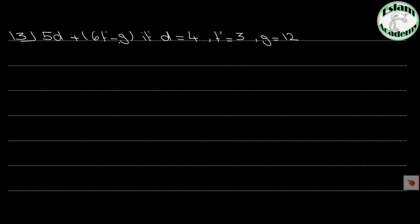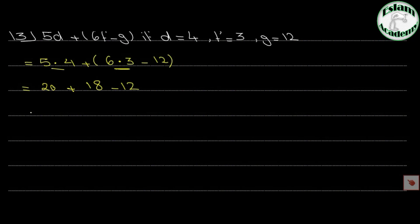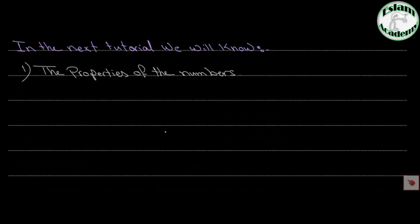Problem 3: 5d plus (6f minus g), where d equals 4, f equals 3, g equals 12. By substitution: 5 times 4 plus (6 times 3 minus 12). The two operations inside and outside the bracket do not affect each other. So 5 times 4 equals 20, and 6 times 3 equals 18 minus 12 equals 6. Then 20 plus 18 minus 12 equals 38 minus 12, which is 26. In the next tutorial we will learn the properties of numbers.